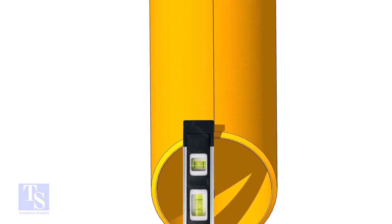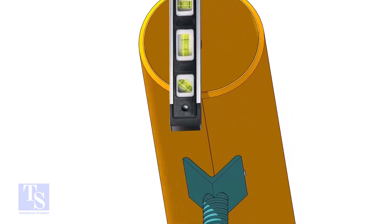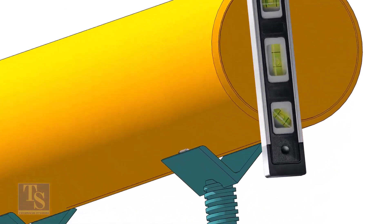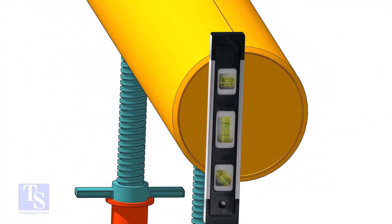Level the pipe horizontally and vertically as shown. After leveling, arrest the pipe to stop it from rotating.